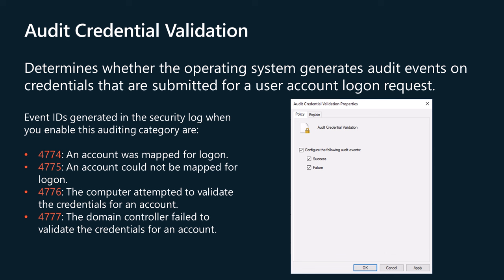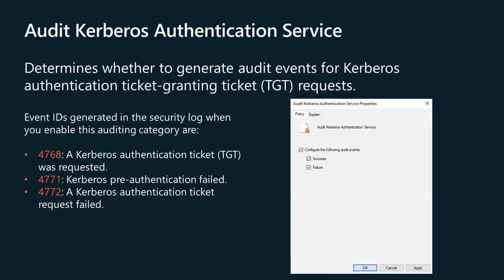The Audit Kerberos Authentication Service policy determines whether to generate audit events for Kerberos authentication ticket granting ticket (TGT) requests. If you configure this policy setting, an audit event is generated after a Kerberos authentication TGT request. Success audits record successful attempts and failure audits record unsuccessful attempts. Event volume is high on Kerberos key distribution center servers and domain controllers. This subcategory contains events about issued TGTs and failed TGT requests. It also contains events about failed pre-authentications due to wrong user password or when the user's password has expired. Microsoft recommends success auditing because you will see all Kerberos authentication TGT requests, which are a part of domain account logons. You can also see the IP address from which an account requested a TGT, when the TGT was requested, and which encryption type was used.